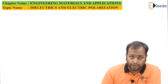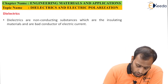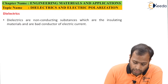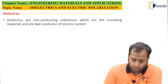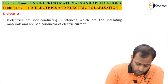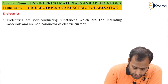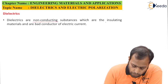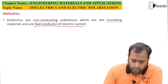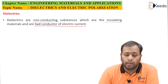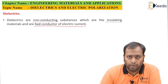Now, dielectrics. We define dielectrics as non-conducting substances which are insulating materials and are bad conductors of electric current. The important points are that it should be non-conducting, it should be insulating, as well as a bad conductor of electric current. These are the properties which give dielectrics a particular advantage.